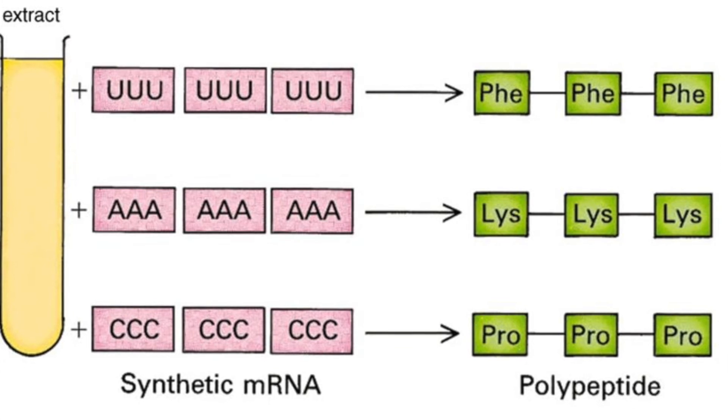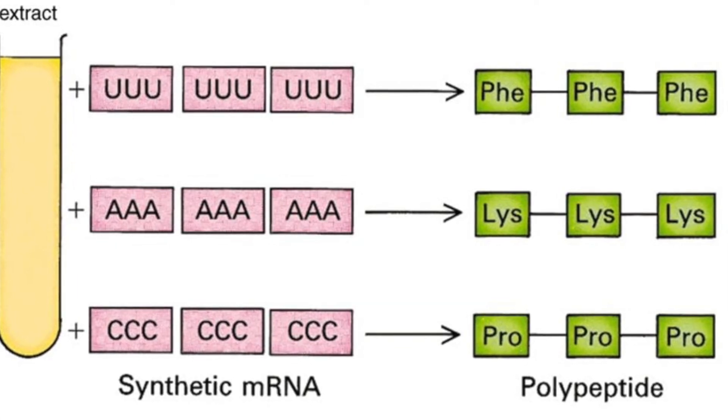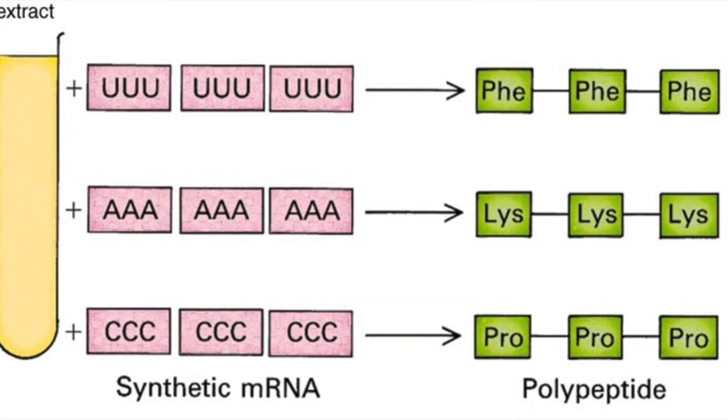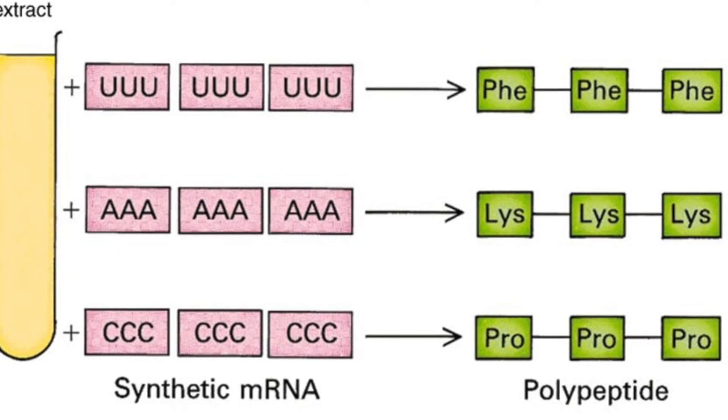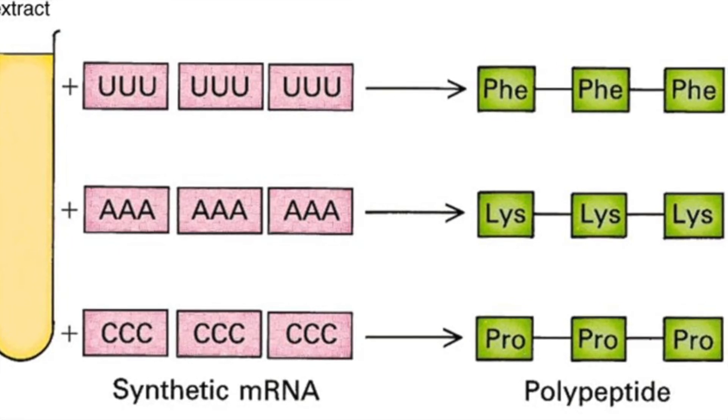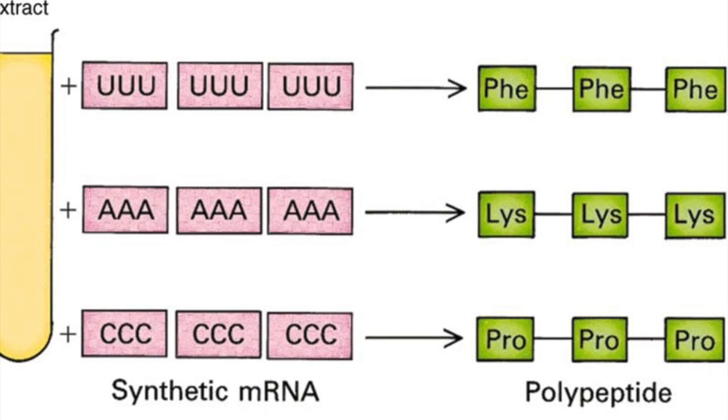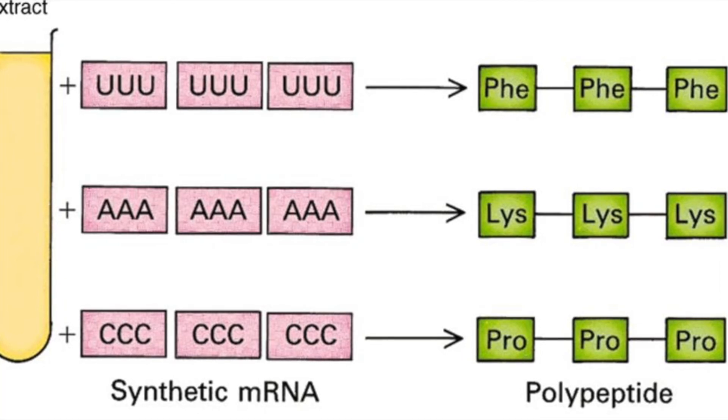The results not only proved that poly-U coded for phenylalanine, poly-C coded for proline, and poly-A coded for lysine. The poly-G results could not be discovered because there were technical issues.